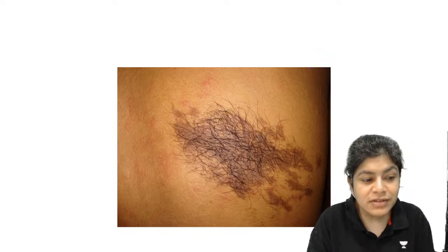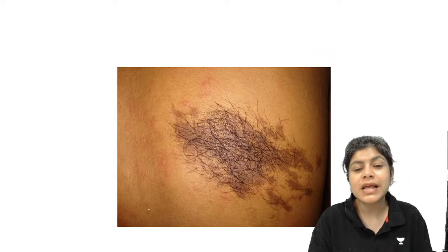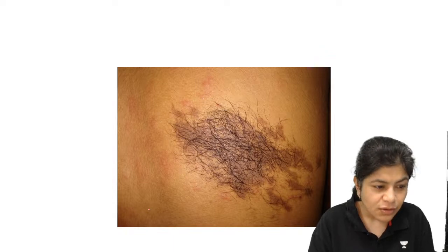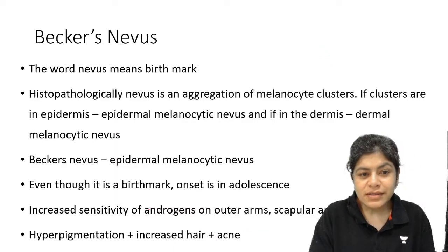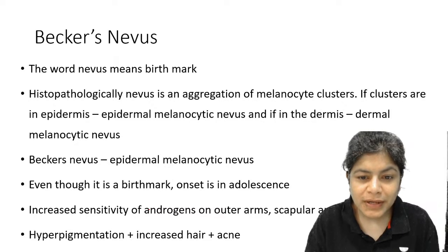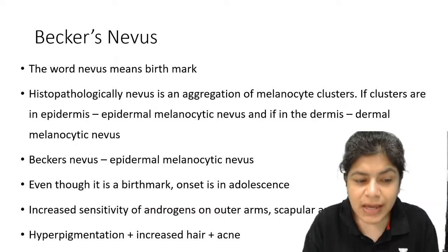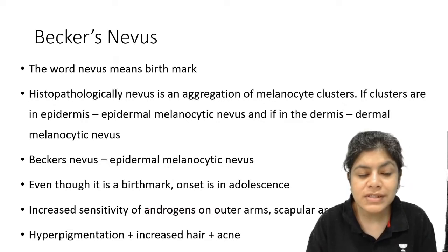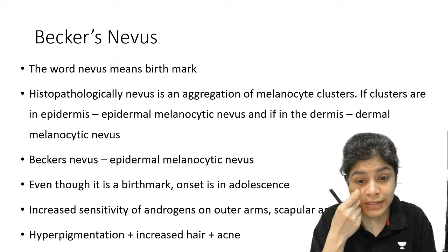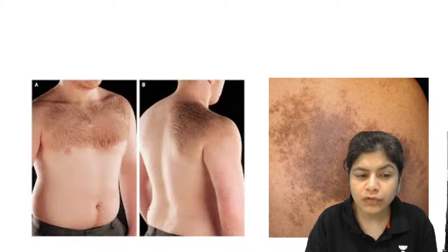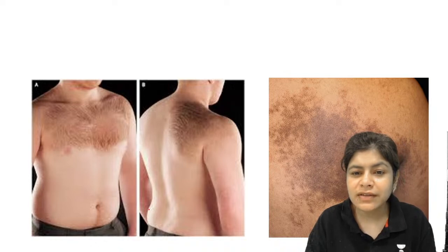Becker's nevus does not present at birth — onset is in adolescence. It is an epidermal melanocytic nevus with increased androgen sensitivity, hence the increased hair and acne over the hyperpigmented patch. The most common site of Becker's nevus is usually the upper shoulder and chest.